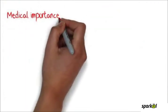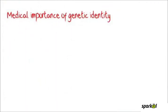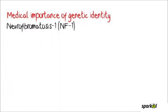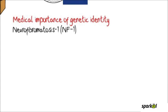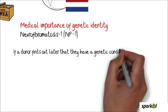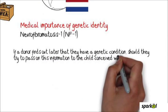On 25 September 2012, it was reported that a man who had donated his sperm at a clinic in Denmark had passed on a genetic disease to five of his children. Five of the children have been diagnosed with NF1. If a donor finds out later that they have a genetic condition, should they try to pass on this information to the child conceived with their egg or sperm?